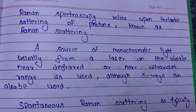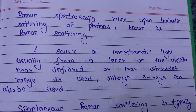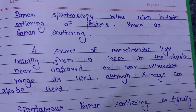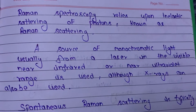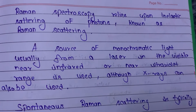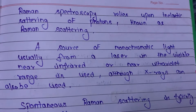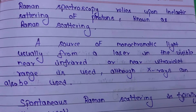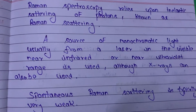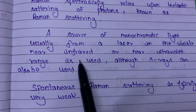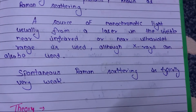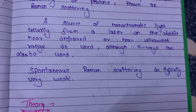Raman Spectroscopy relies upon inelastic scattering of photons, known as Raman scattering. A source of monochromatic light — usually from a laser in the visible, near-infrared, or near-ultraviolet range — is used, although X-rays can also be used.